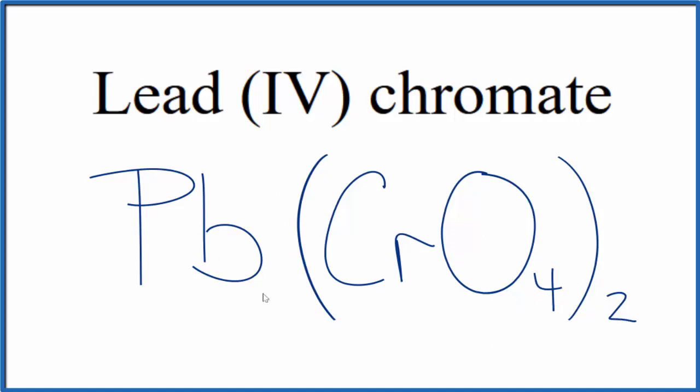If you were given the formula and asked to write the name for Pb(CrO4)2, you'd know that the chromate, the whole thing is 2-, so you have 2- times the 2 here, 4-, the lead that would have to be the 4+. And since lead is a transition metal, it's called a post-transition metal, you'd need to write that Roman numeral up here to show that in the formula.